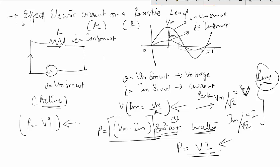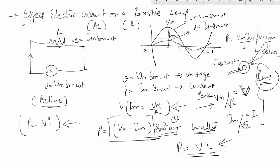In DC circuits, the power is equal to Vm Im divided by 2, minus Vm Im divided by 2 times cosine 2 omega t. If considering cosine 2 omega t, this whole component will be zero for the purely resistive circuit, so the power will be equal to VI.